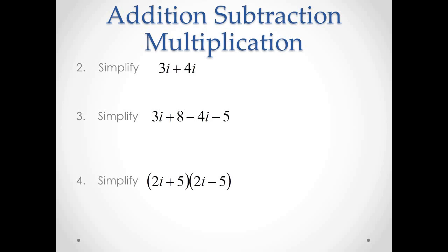For number 2, we need to simplify the sum of 3i plus 4i. Just like in algebra where we have 3x plus 4x equals 7x, we can add these up and get 3i plus 4i equals 7i.